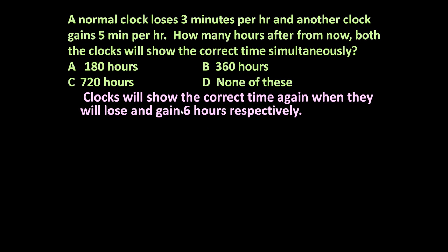The clock which is losing will lose six hours and the clock which is gaining will gain six hours. When this condition occurs, both clocks will show the correct time again.